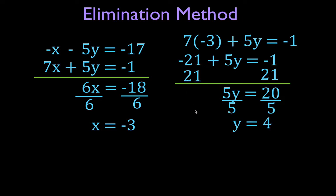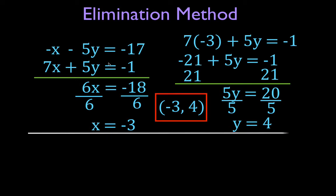Now I know that this point, -3, 4, is a solution for both of these lines. That's where these two lines intersect. Am I sure? Well, let's just do another check.